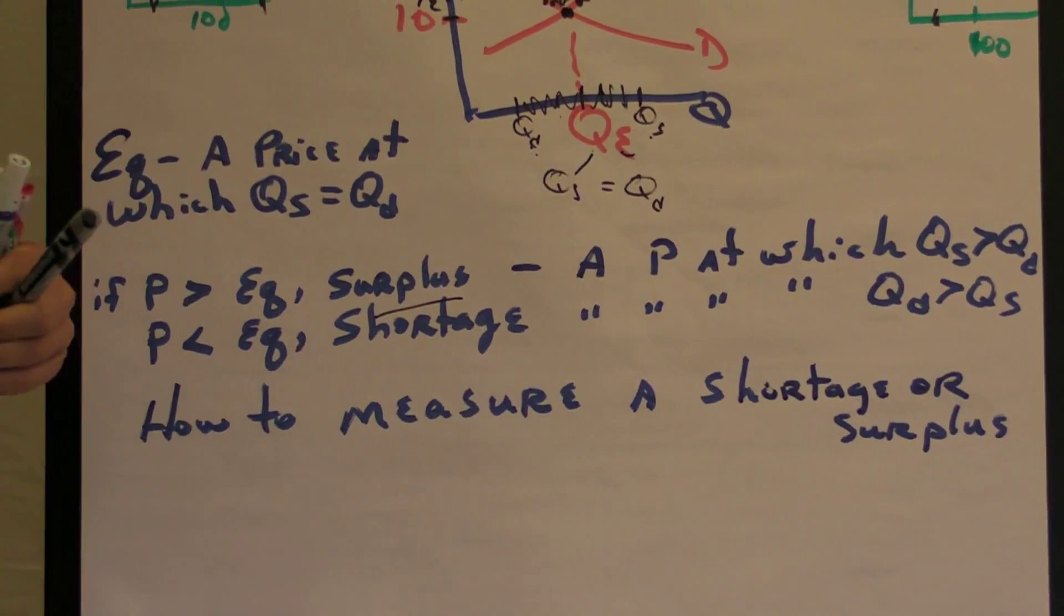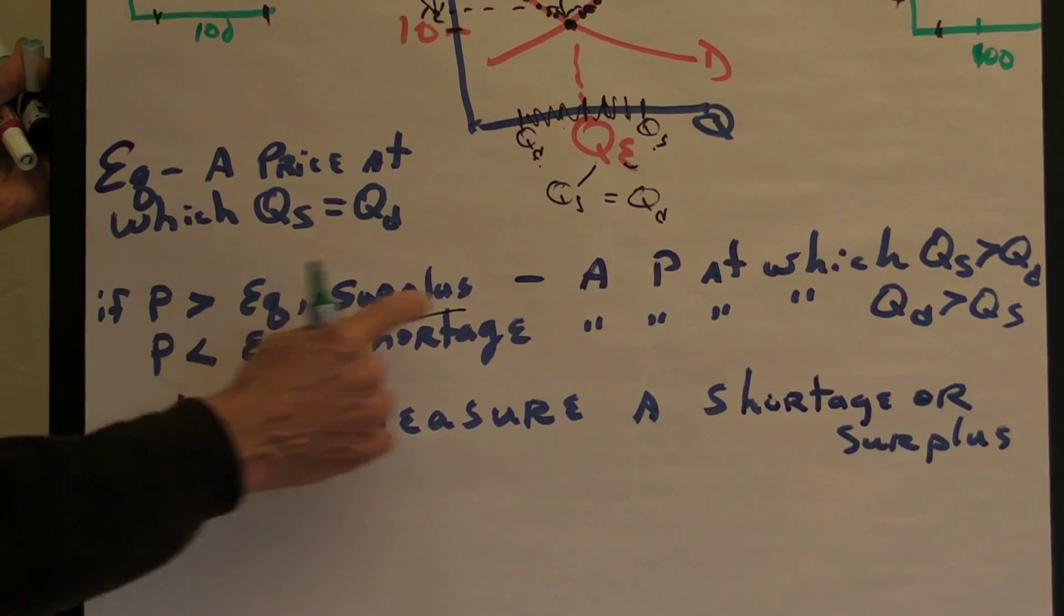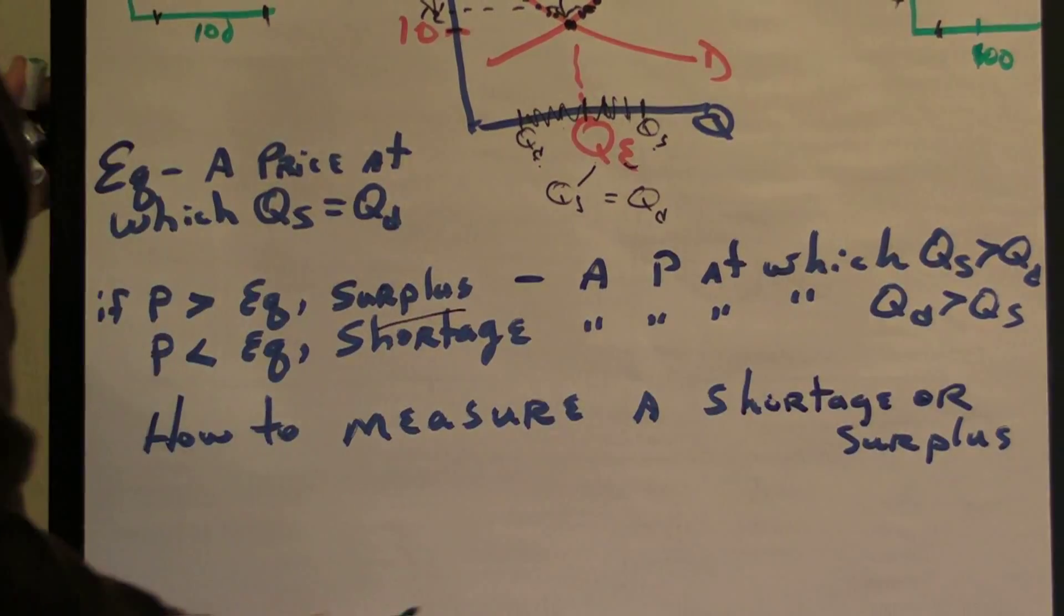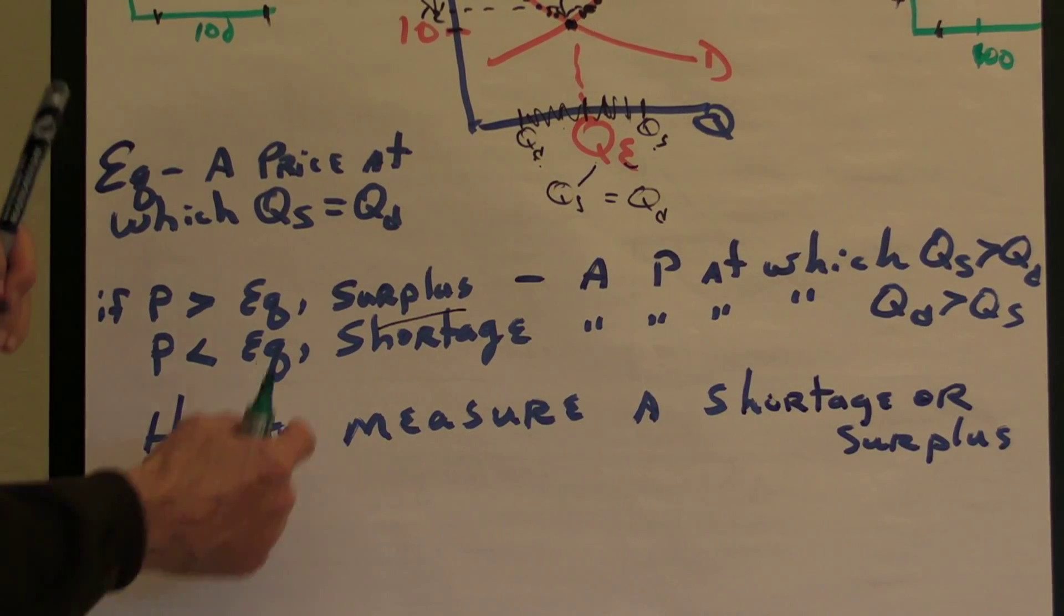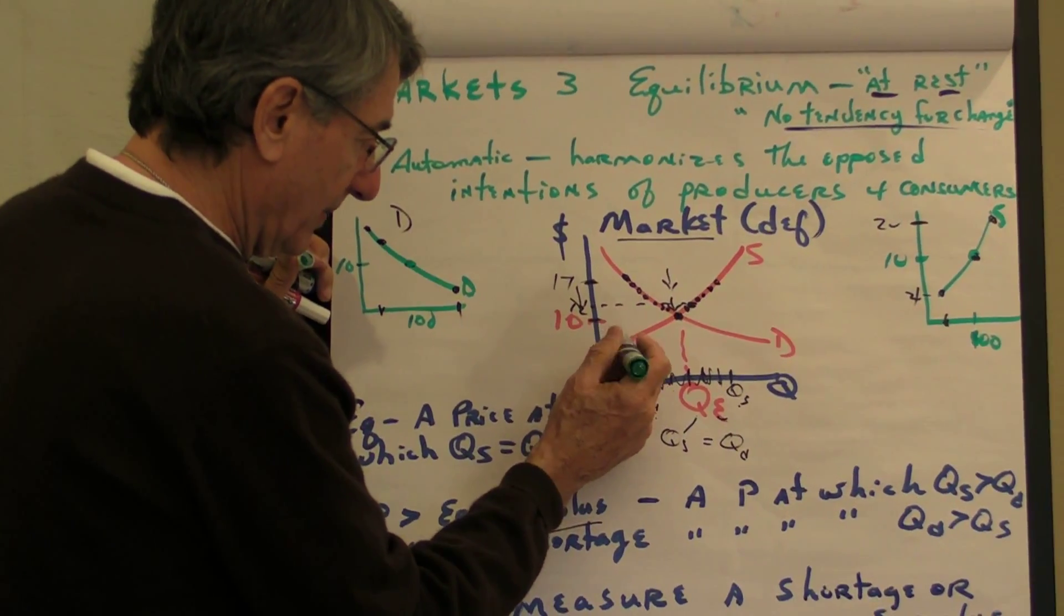The surplus is defined as a price at which the quantity supplied is greater than the quantity demanded. That's the definition of a surplus. And in a free market, the surplus pushes price down to equilibrium.